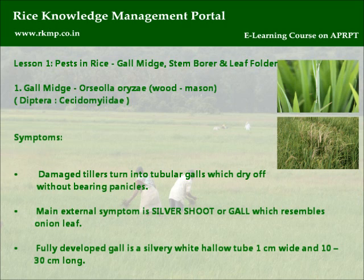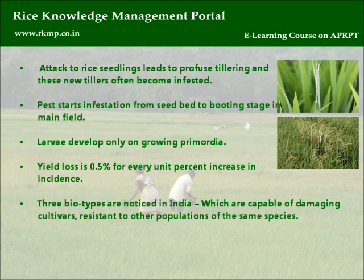Symptoms: Damaged tillers turn into tubular galls which dry off without bearing panicles. The main external symptom is a silvershoot or gall which resembles an onion leaf. A fully developed gall is a silvery white hollow tube, 1 cm wide and 10 to 30 cm long. Attacked rice seedlings lead to profuse tillering, and these new tillers often become infested.